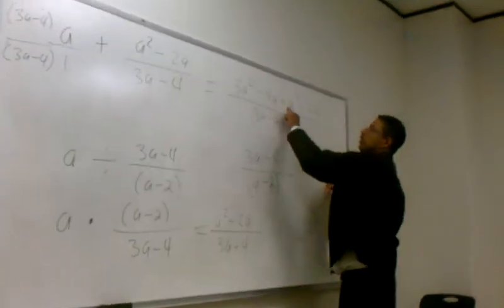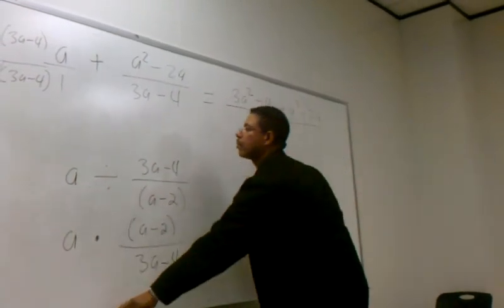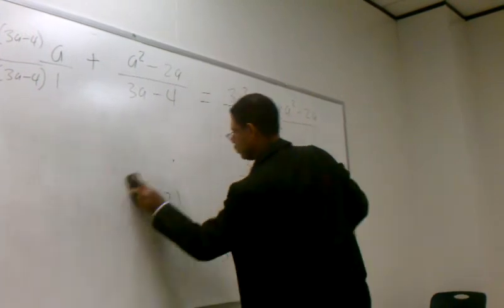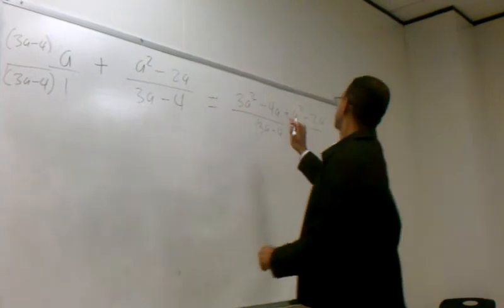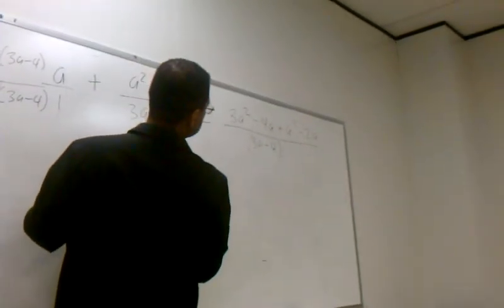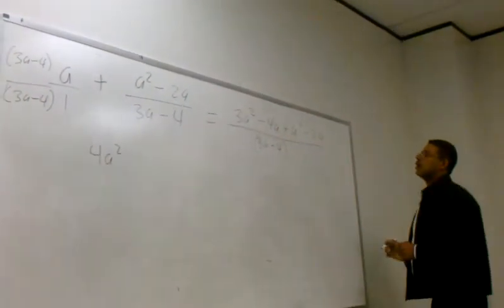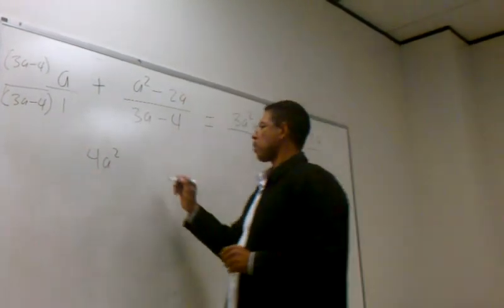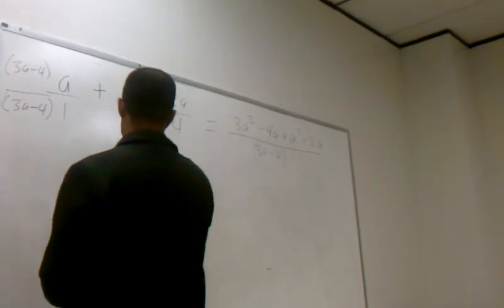So what's 3 of these and 1 of these? 4a squared. Now combine the linear terms: negative 4a with negative 2a gives negative 6a. All divided by my common denominator, which is 3a minus 4.